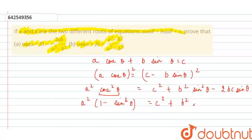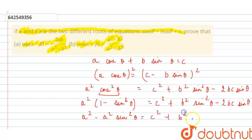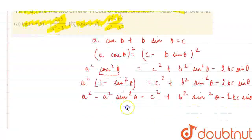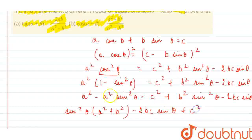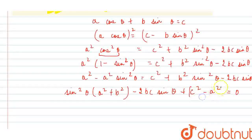Substituting and simplifying: a² − a²·sin²θ = c² + b²·sin²θ − 2bc·sinθ. Taking all sin²θ terms together gives (a²+b²)·sin²θ − 2bc·sinθ + (c²−a²) = 0. This is a quadratic equation in sinθ of the standard form, where the variable is sinθ.